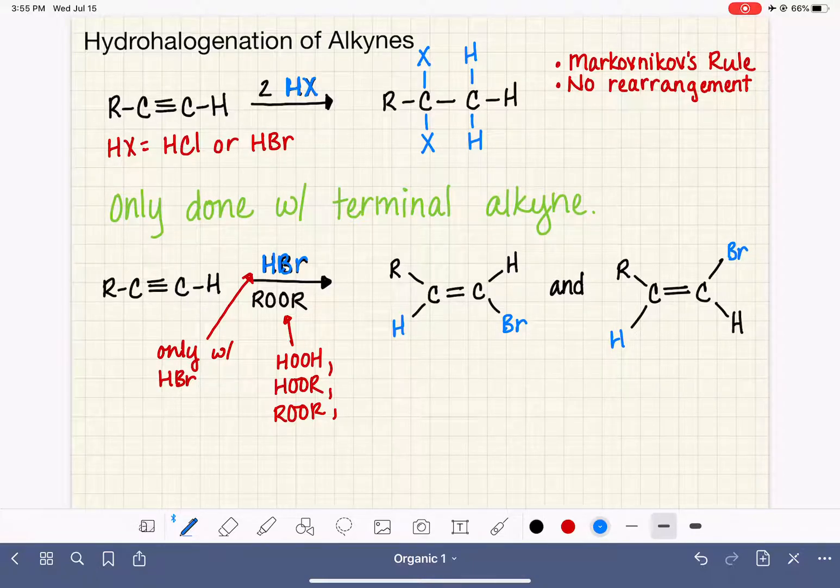So some of them will give us the E product, and some of them will give us the Z product. I'm not going to label them cis or trans because it's really going to depend on what the R group is in this reaction. This reaction is only done with one equivalent of HBr. So only done with HBr and only one HBr, not two.